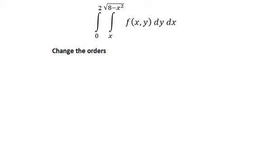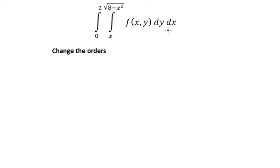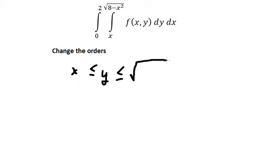The first thing we need to find the bounds of dy and dx. About y, we know that y is greater than or equal to x and smaller than or equal to the square root of 8 minus x squared. For dx, that is from zero to number two.